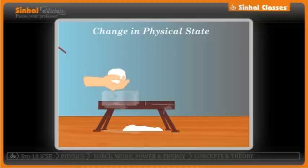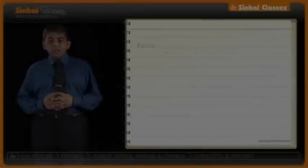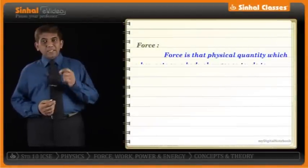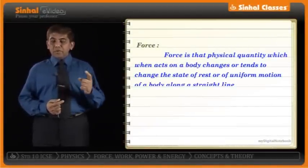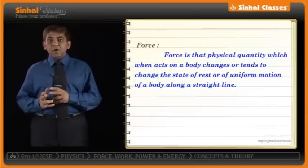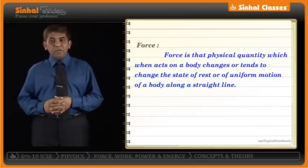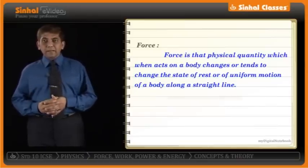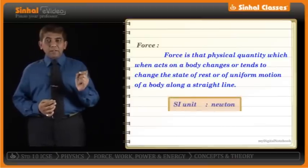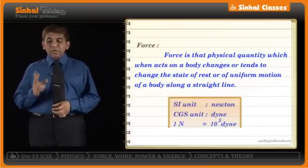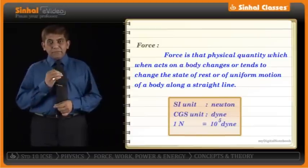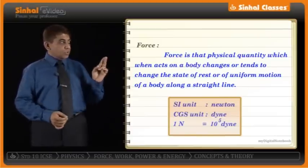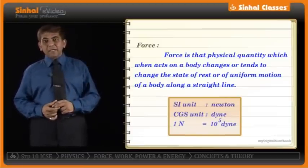So we have many day-to-day examples related to force. To summarize: force is that physical quantity which, when it acts on a body, changes or tends to change the state of rest or of uniform motion along a straight line. Its SI unit is the newton and its CGS unit is the dyne. The correlation between these units is: 1 newton = 10⁵ dyne.